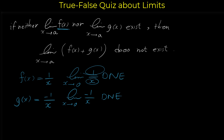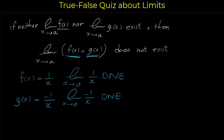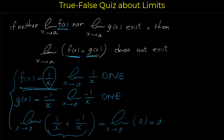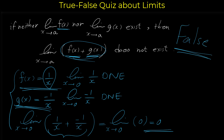So the limit of f(x) doesn't exist and the limit of g(x) also doesn't exist. But note that if we add these functions — if we add 1/x and -1/x — we get the limit as x approaches 0 of [f(x) + g(x)] = 1/x + (-1/x) = 0, and the limit of 0 as x approaches 0 is 0. So by this example, it is possible that the limit of f and limit of g don't exist but the limit of their sum does exist. Therefore this statement is not always true.